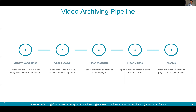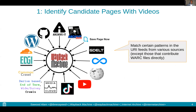Let's walk you through these processes one at a time. The Wayback Machine receives data from many different sources. Some of these sources provide us with work files, while others just provide a feed of URLs which we then go ahead and archive. Of the sources that provide us with a feed of URLs, we match certain patterns to identify URLs that might contain videos in those pages.